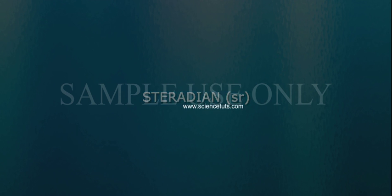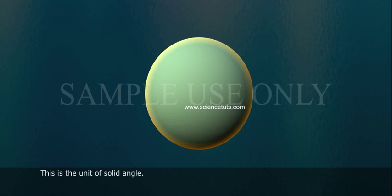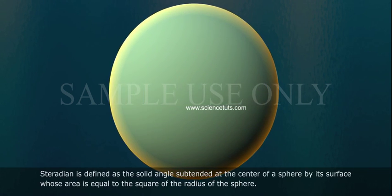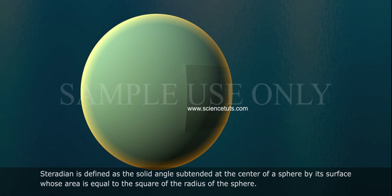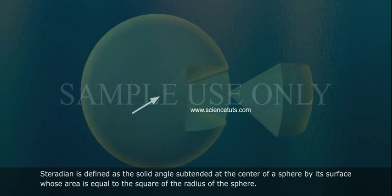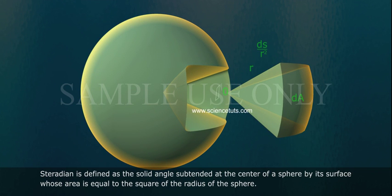Steradian (sr). This is the unit of solid angle. Steradian is defined as the solid angle subtended at the center of a sphere by its surface whose area is equal to the square of the radius of the sphere. Thank you.